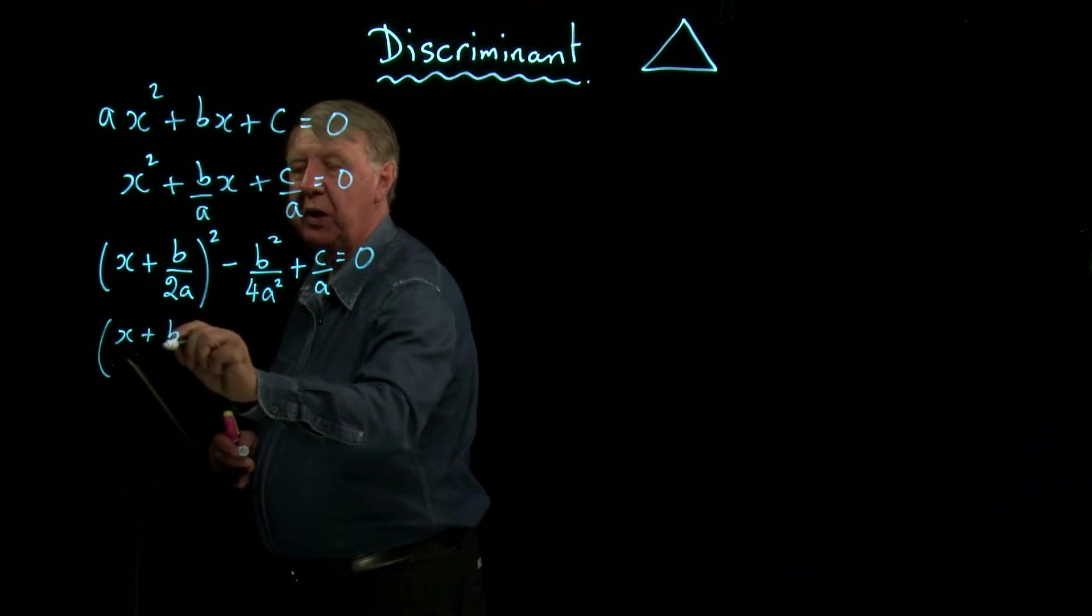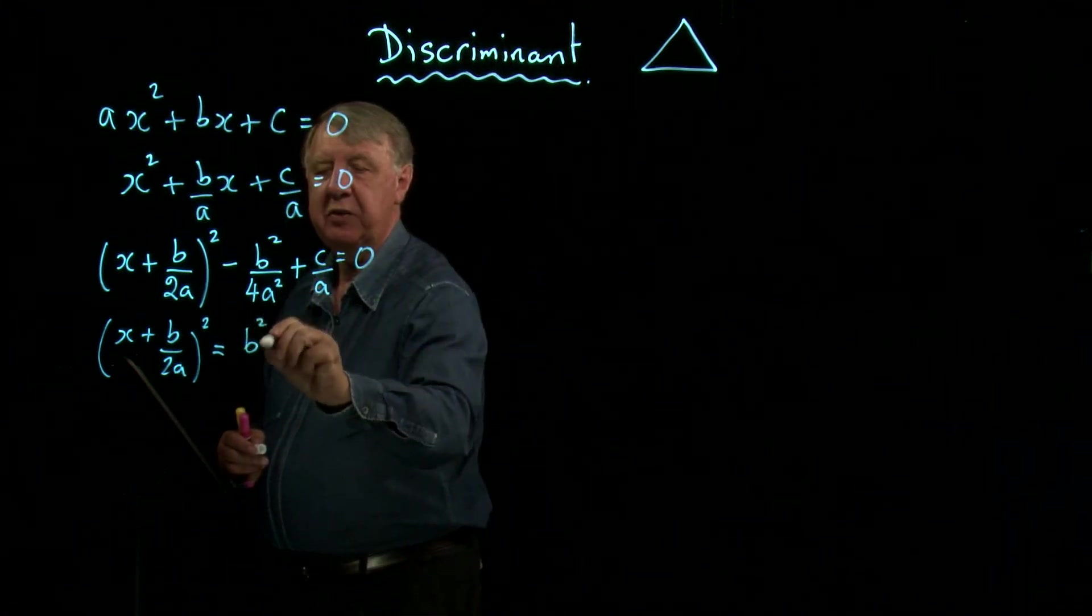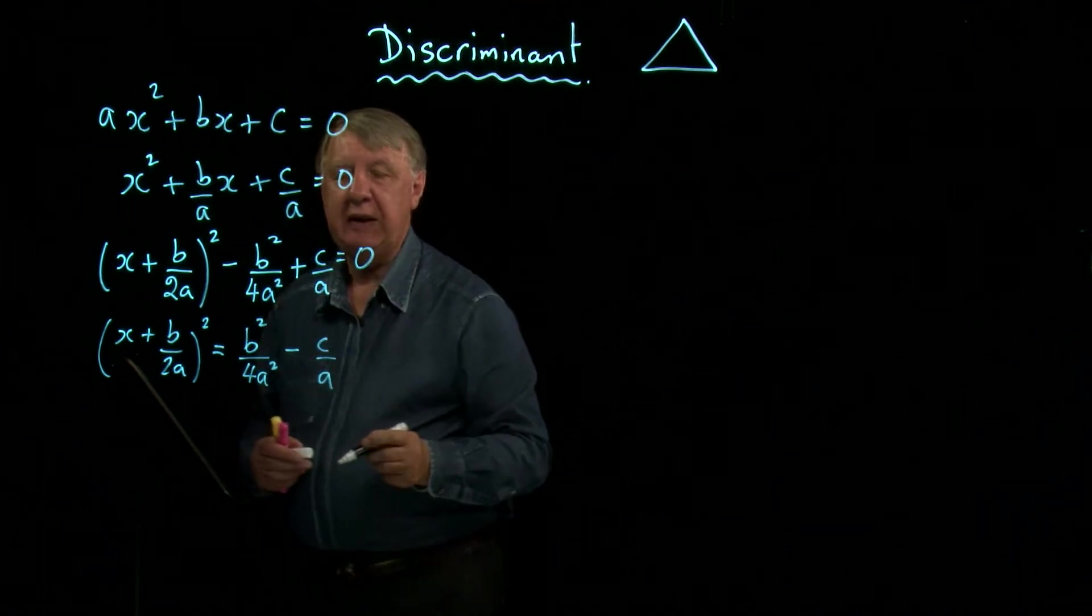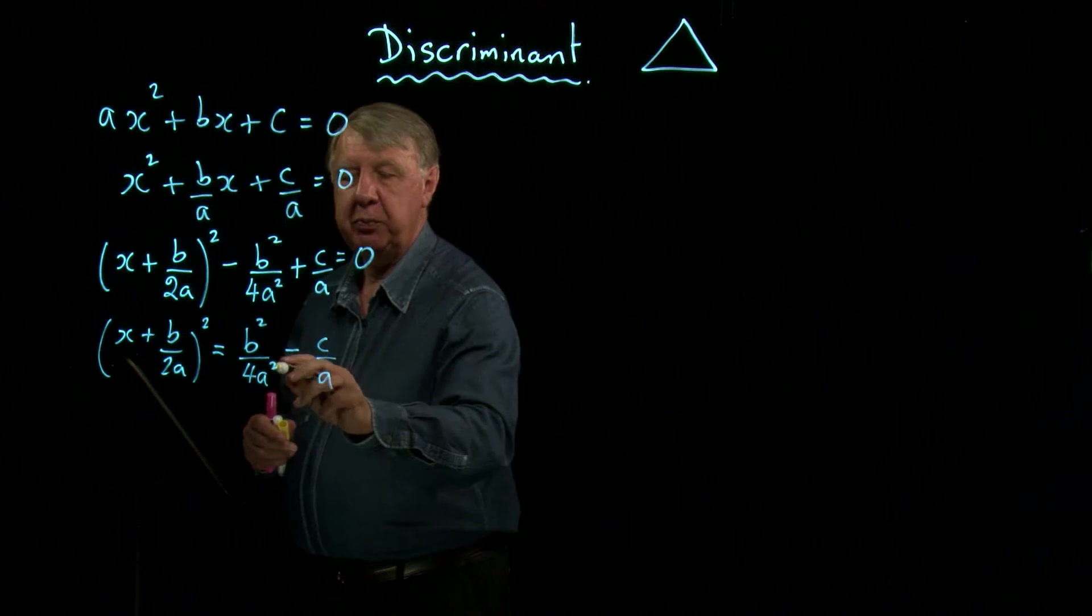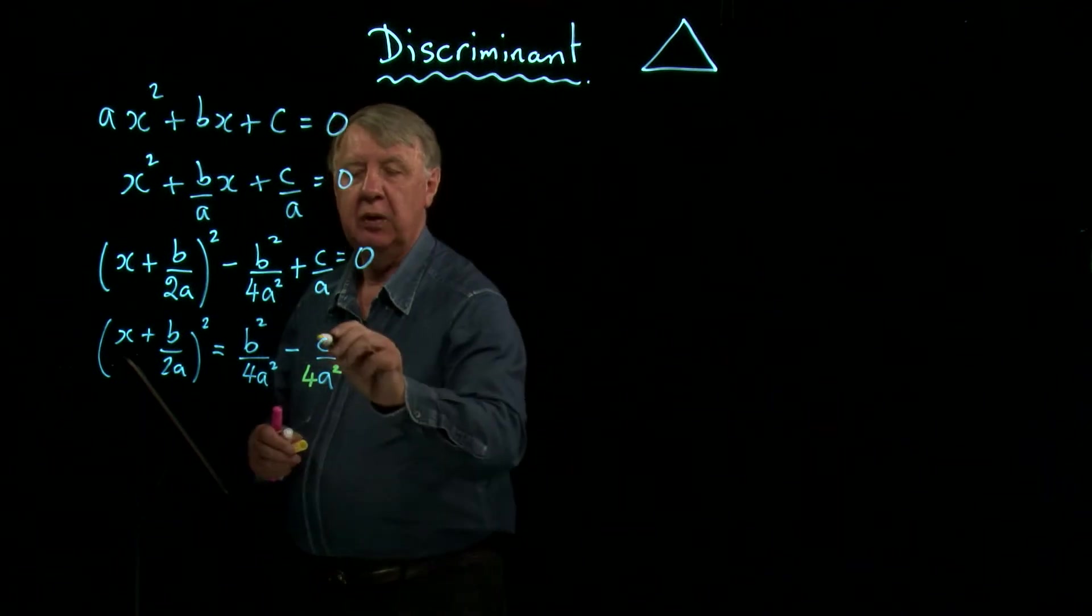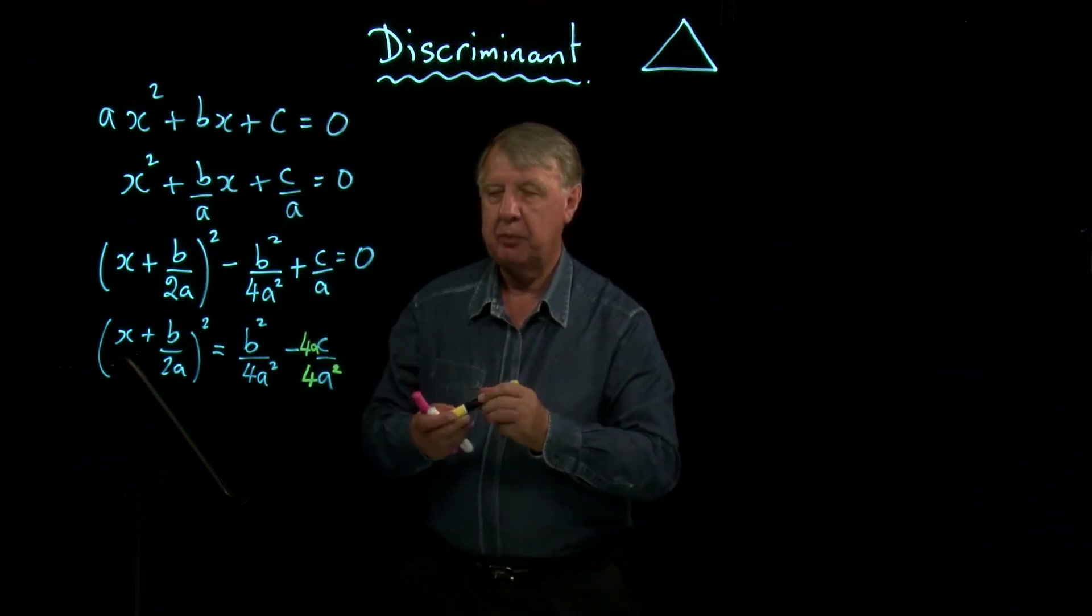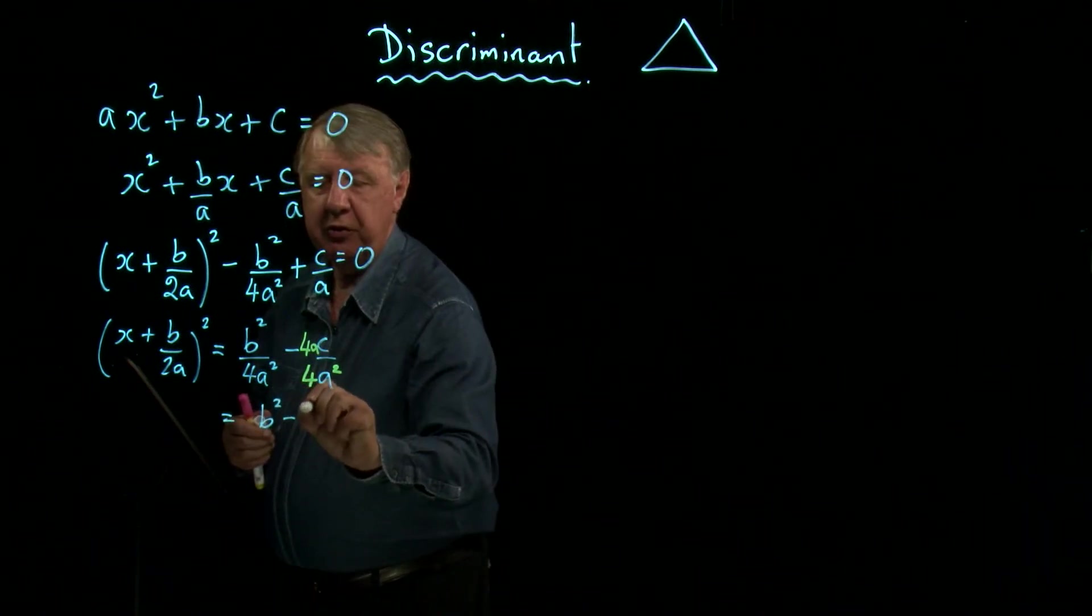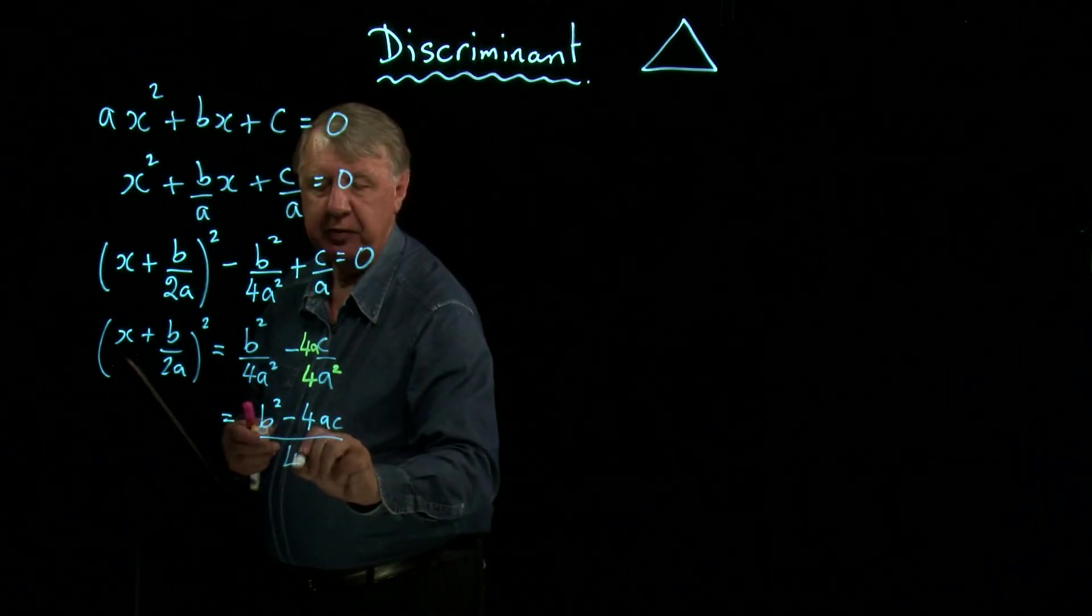Leave the square bracket on the left, put everything else onto the right. So that becomes plus b squared over 4a squared minus c over a. And if I multiply the bottom line by 4a, that becomes 4a squared. I'll multiply the top by 4a, giving me 4ac. So that as a single fraction, I get b squared minus 4ac all over 4a squared.